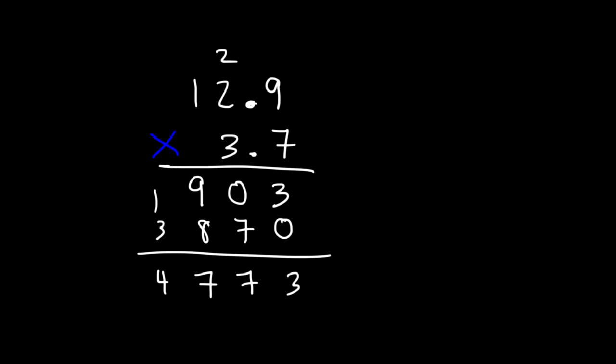Now, how many numbers do we have to the right of a decimal point? Here's one, and here's another one. So we've got two numbers to the right of a decimal point. Our final answer should be the same. So the answer is 47.73.